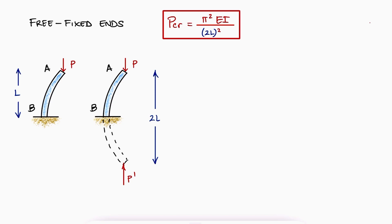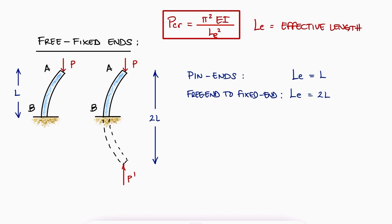To simplify this process for the other end conditions, we'll just use L_e for the effective length of all cases, and just remember that the effective length is L for pin ends and 2L for free end to fixed end columns. The effective length L_e over r would then be called the effective slenderness ratio.